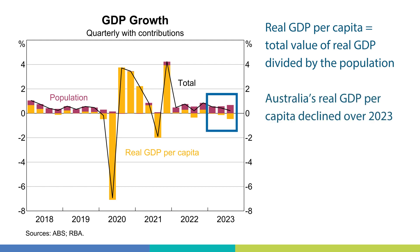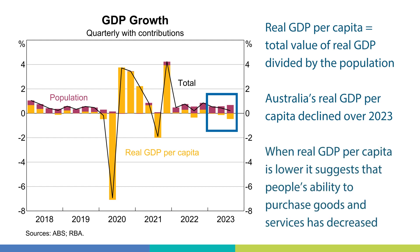What it shows is that real GDP per capita declined over 2023. This measure is one way of understanding how living standards in Australia have changed. When real GDP per capita is lower, it generally suggests that people's ability to purchase goods and services has decreased.